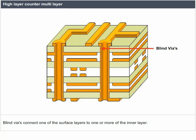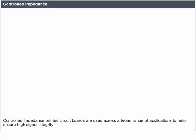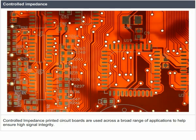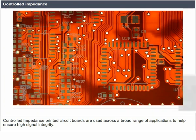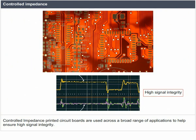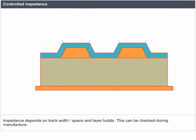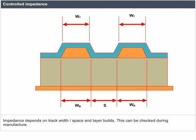Controlled impedance: controlled impedance printed circuit boards are used across a broad range of applications to help ensure high signal integrity. Impedance depends on track width, space and layer build. This can be checked during manufacture.